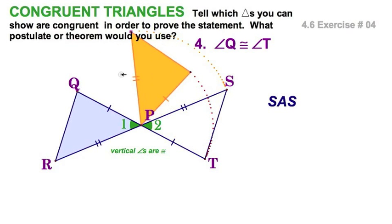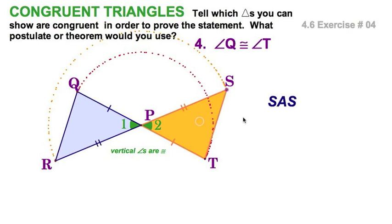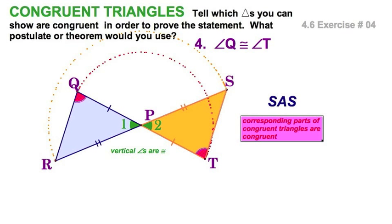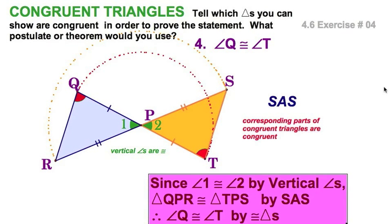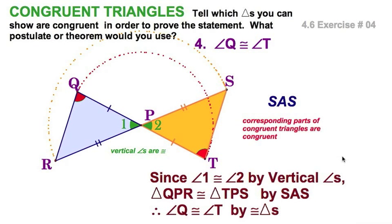We can see clearly these are rotations of each other. So if we consider the corresponding parts of congruent triangles, these two triangles are congruent by side-angle-side. And the result — since they are congruent, all their corresponding parts, in this case angle Q and angle T, are congruent.